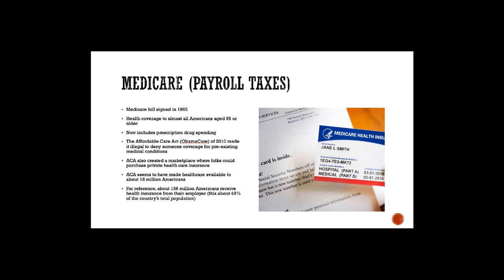In addition to Medicare, there's now the Affordable Care Act of 2010 — also known as Obamacare. One of the things the ACA did was make it illegal for an insurance company to deny coverage for a pre-existing medical condition. It also created a marketplace where people could purchase private health insurance if their employer didn't provide it. Over the last several years the ACA has made health care available to an additional 18 million Americans.